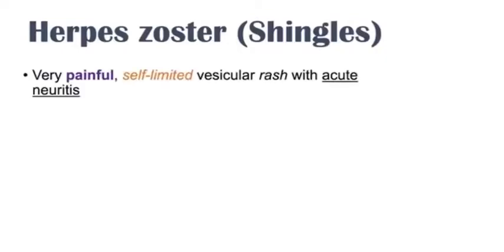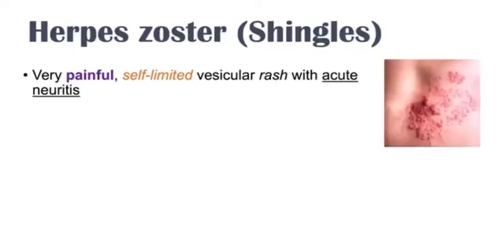Shingles is a very painful self-limited vesicular rash with acute neuritis. I'm going to talk about what all those terms mean more specifically in the next couple of slides.